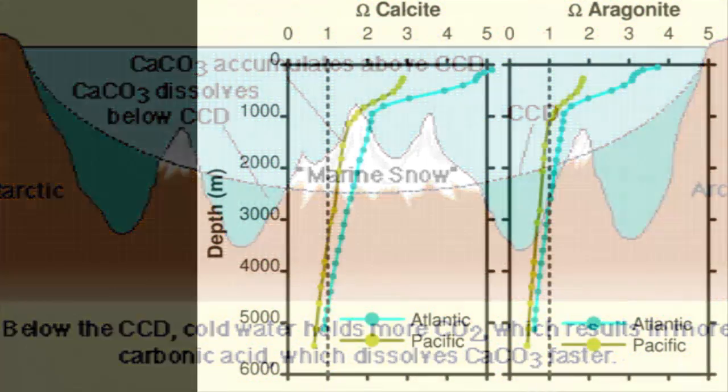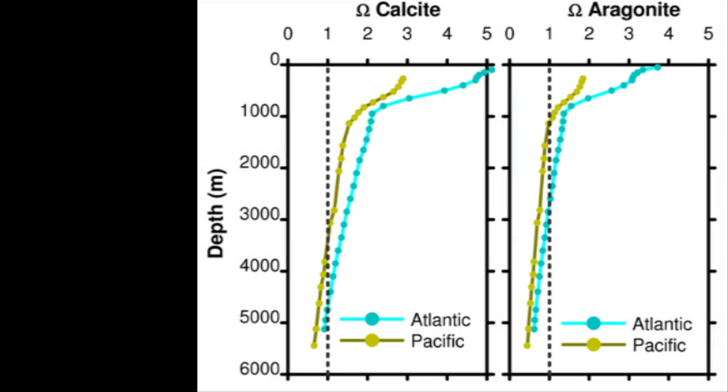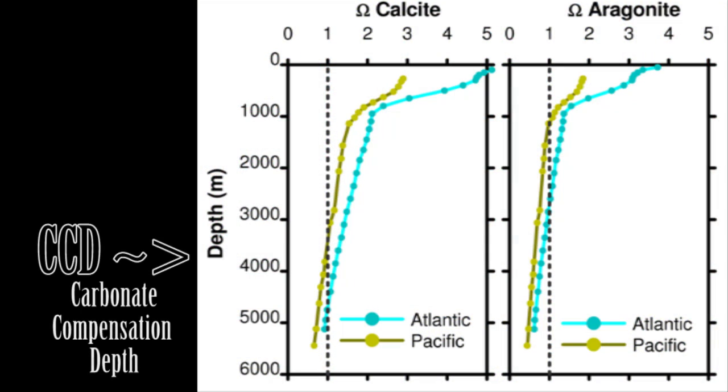Below this depth, called the carbonate compensation depth, or CCD, calcite does not accumulate, and so even with very low clastic input, wind-blown silt and clays and insoluble organics are the only things to settle into the deeper seas at very, very slow rates.